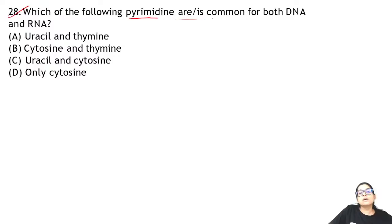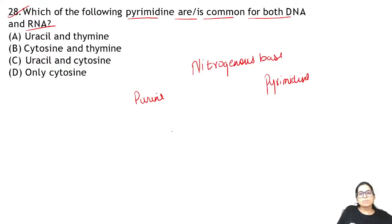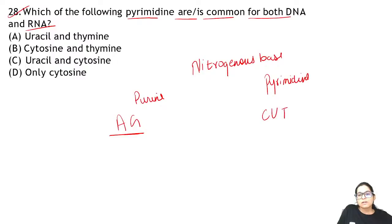Question 28: which pyrimidine is common to both DNA and RNA? There are two types of nitrogenous bases: purines (A and G — remember 'A ji suntey ho') and pyrimidines (C, U, T — 'CUT'). The pyrimidine common to both DNA and RNA is only cytosine. Uracil is only in RNA and thymine only in DNA. So the answer is cytosine only.